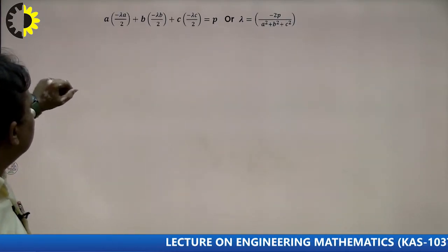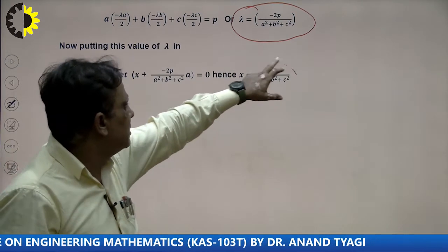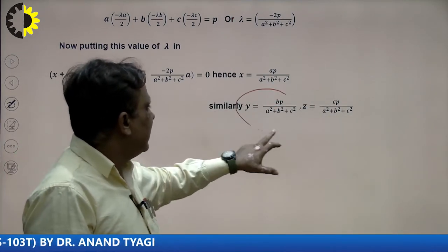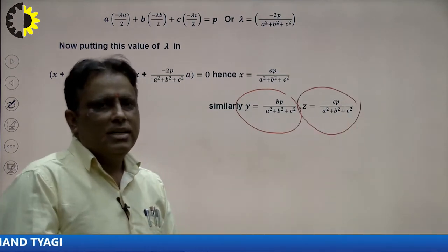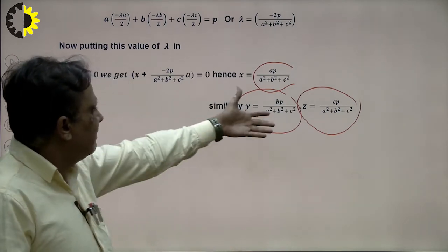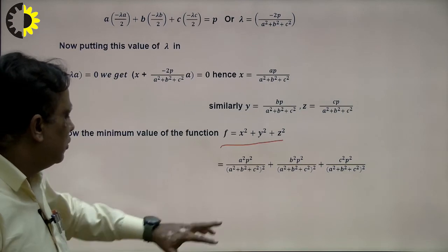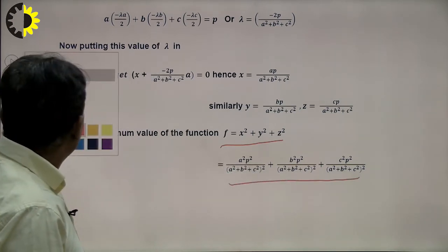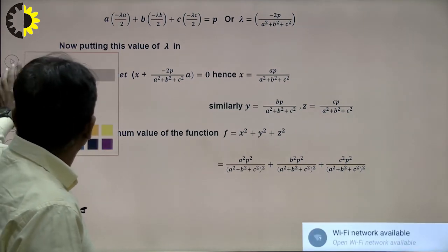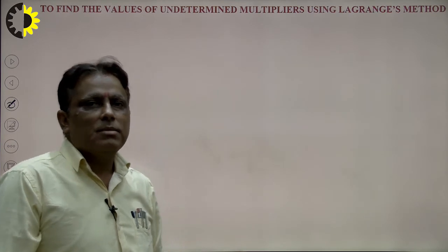We calculate the value of λ and substitute back into x, y, z. The extreme point is: x = Ap/(A²+B²+C²), y = Bp/(A²+B²+C²), z = Cp/(A²+B²+C²) — these are symmetric. Substituting these values of x, y, z into the given function gives the extreme (minimum) value of x² + y² + z².